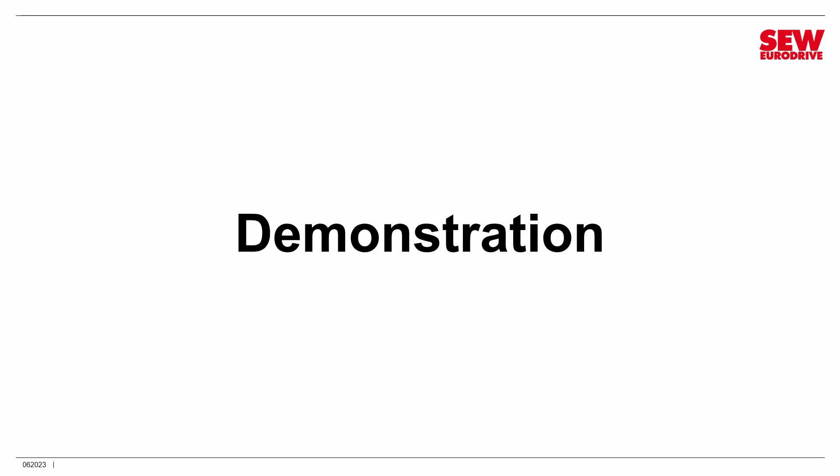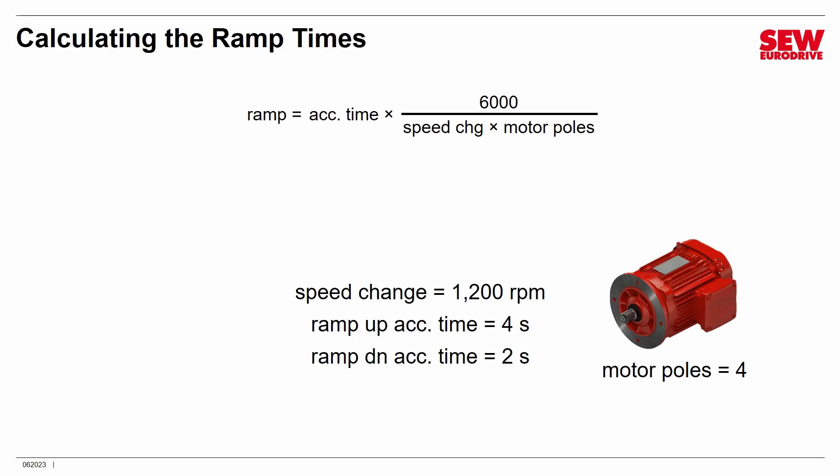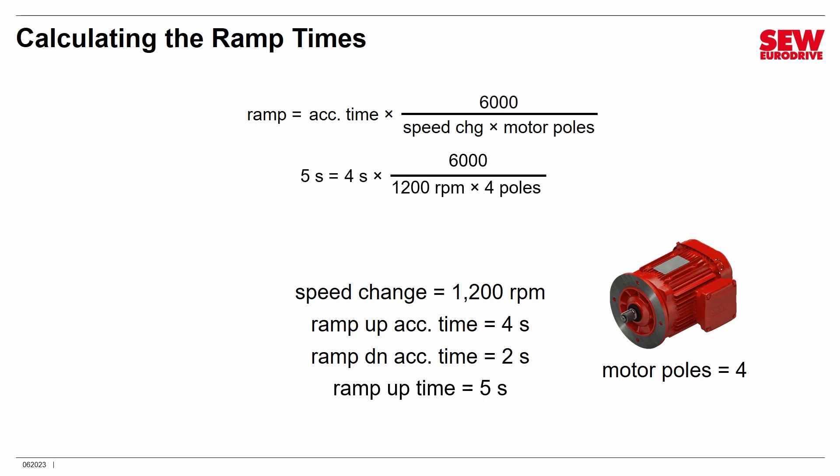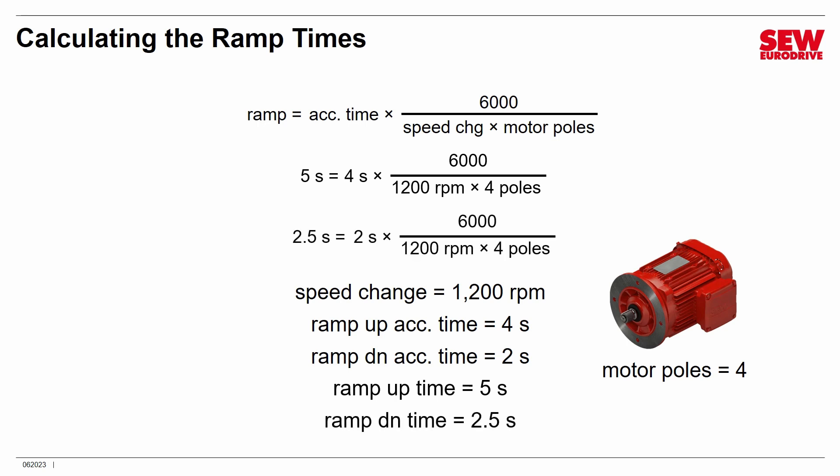Let me demonstrate the solution. First, calculate the ramp times. Using the equation introduced earlier: for a 1,200 RPM speed change with a 4-second up acceleration time and a 4-pole motor, the formula gives: 4 seconds × 6,000 ÷ (1,200 RPM × 4 poles) = 5 second ramp time. For the down ramp with 2 seconds: 2 × 6,000 ÷ (1,200 × 4) = 2.5 second ramp time. So we need to program 5 seconds and 2.5 seconds into the right parameters to achieve the desired acceleration and deceleration for a 1,200 RPM speed change.